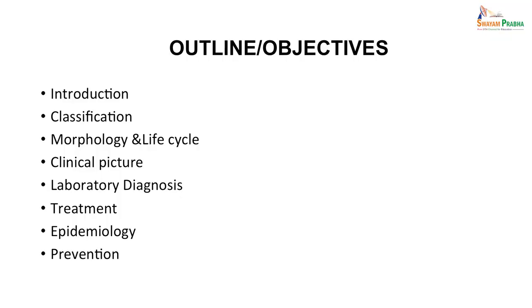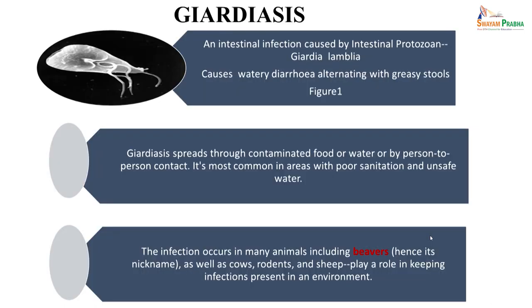At the end of this lecture you should be able to learn the parasite biology, pathogenesis and clinical manifestations of the disease caused by it, diagnosis of the disease, treatment, and how to prevent and control the disease. Giardiasis is an intestinal infection caused by the intestinal protozoa Giardia lamblia.